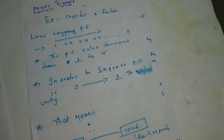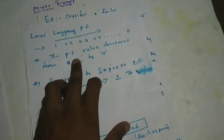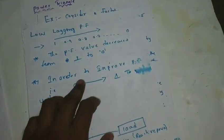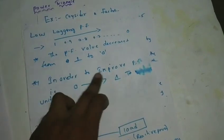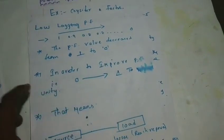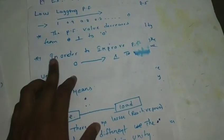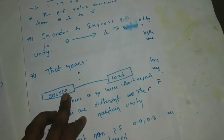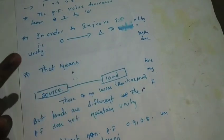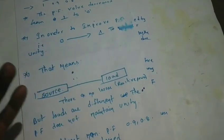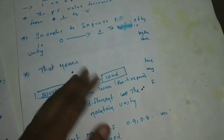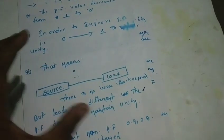Now we will try to improve the power factor. For resistive loads, the power factor is unity. In an industry, there are different types of loads — resistive load, inductive load, and capacitive load. Resistive loads have unity power factor, inductive loads have lagging power factor, and capacitive loads have leading power factor.